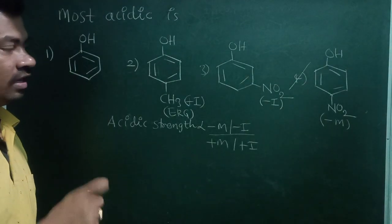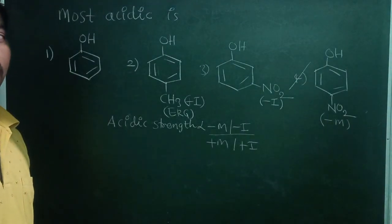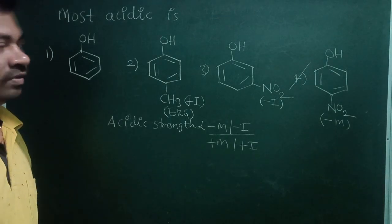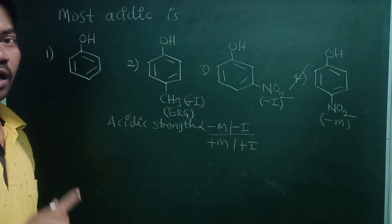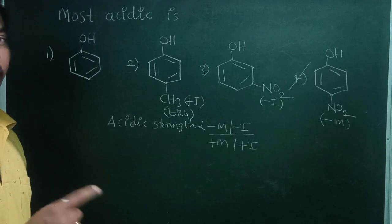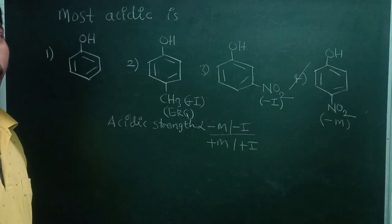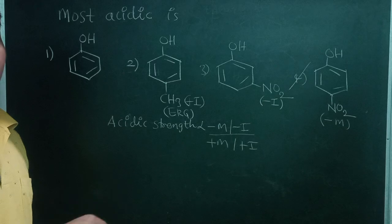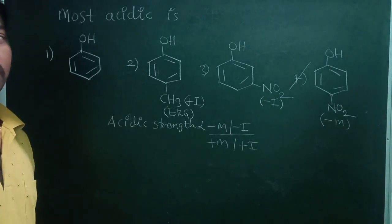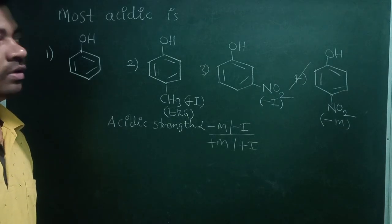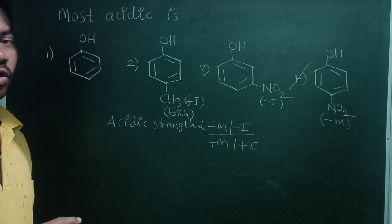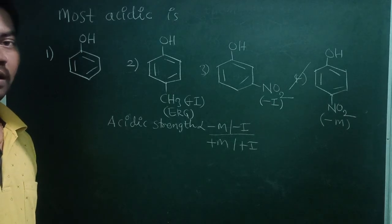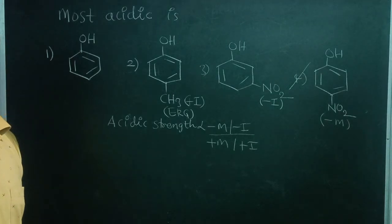Because there minus M effect is effectively than minus I. Nitro group is substituted ortho and para positions. It works as minus M group. Whereas at meta position it works as minus I group because nitro is ortho and para directing group.